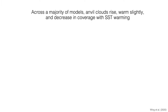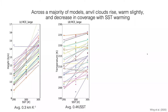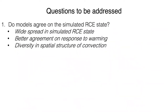One thing models agree on more is how things change in response to warming. Across the majority of models, anvil clouds rise at about 0.3 km per Kelvin of warming and warm slightly at about 0.4 Kelvin per degree of SST warming, roughly consistent with the proportionally higher anvil temperature hypothesis. Across 70 percent of models there is also a decrease in anvil cloud fraction with warming — an interesting result given recent literature on how anvil clouds change with warming. In summary: there is wide spread in the simulated RCE state but better agreement on the response to warming, and quite a bit of diversity in the spatial structure of convection.